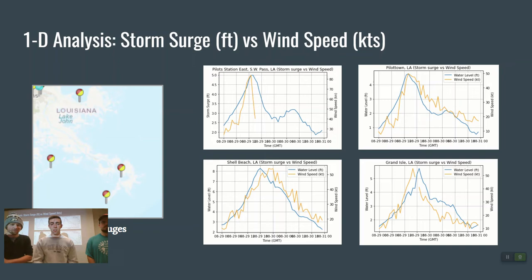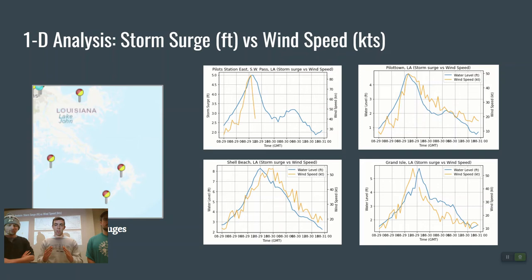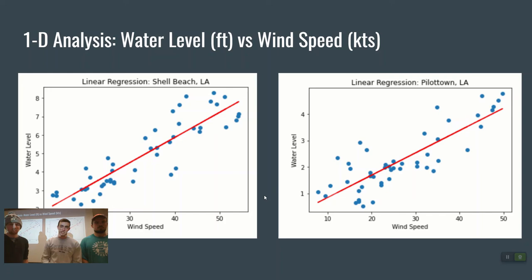For the 1D analysis, we compared storm surge and wind speed when Hurricane Ida made landfall using four tidal gauges along the Louisiana coast: Grand Isle, Pilot Town, and Shell Beach. When the hurricane made landfall around 3 p.m. to about 10 p.m. central time, you can see the wind speeds increase, and the water level increased at about the same rate, showing a strong correlation between wind speed and storm surge. To enhance our results, we used linear regression at Shell Beach and Pilot Town, which confirmed a strong correlation between wind speed and water level data.